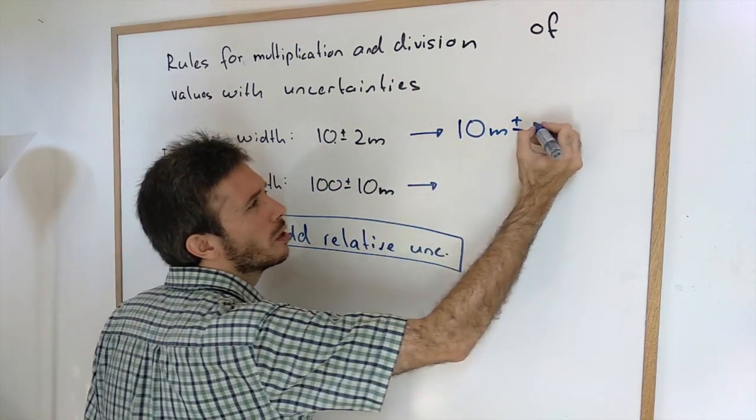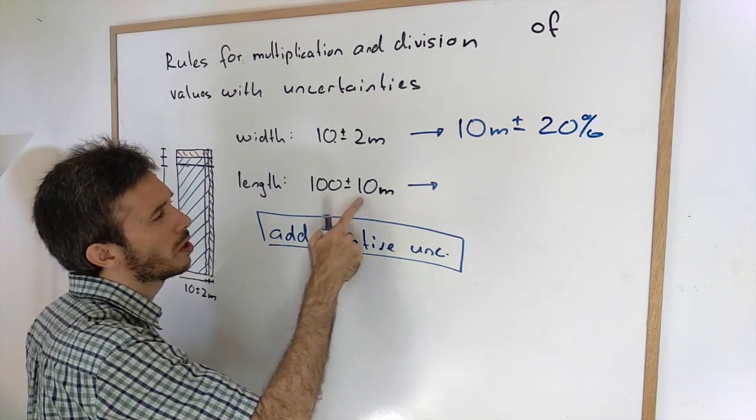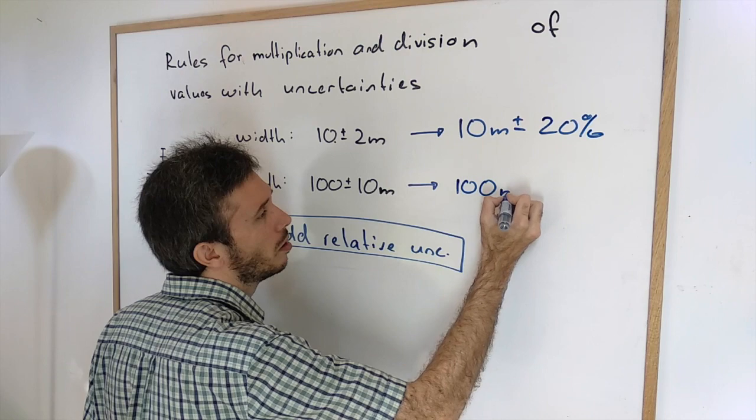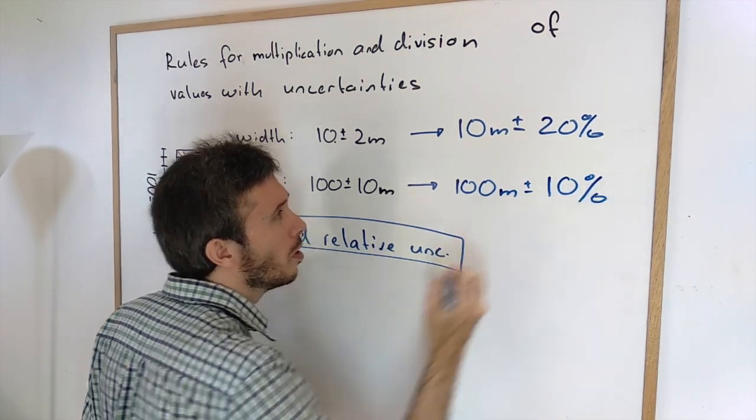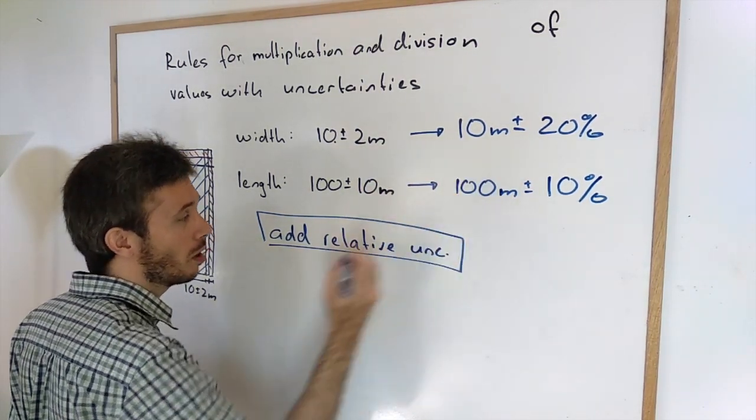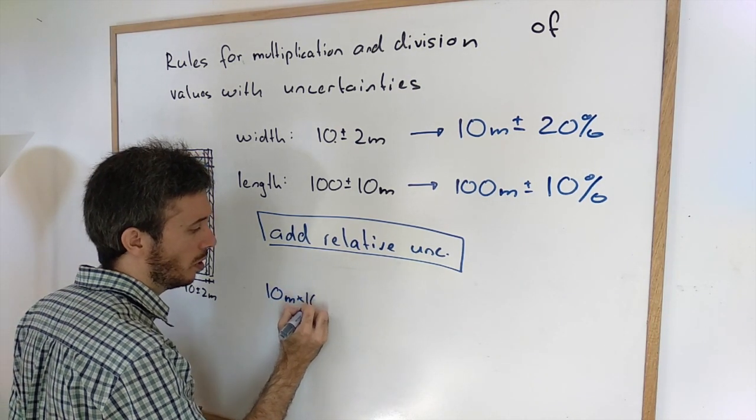And 100 plus minus 10 meters gives me 100 meter plus minus 10 percent. Now what I do for the value itself, I simply multiply my 10 meters with the 100 meters. So I have 10 meters times 100 meters.